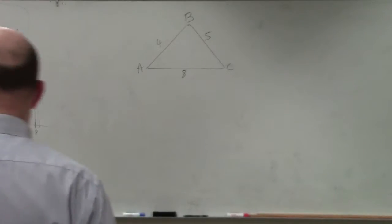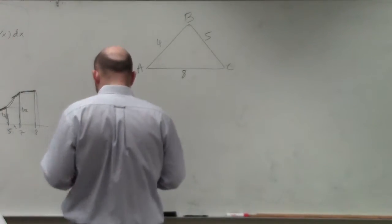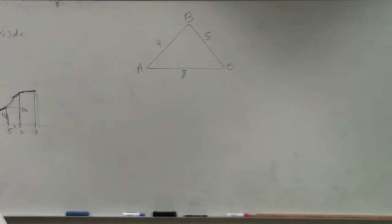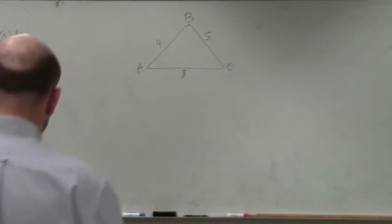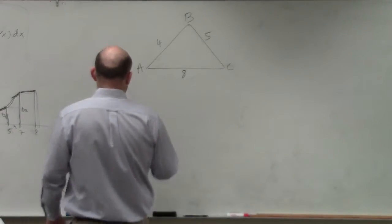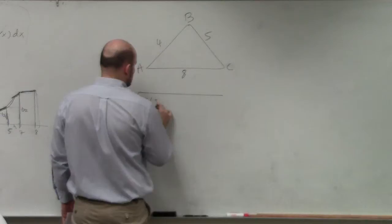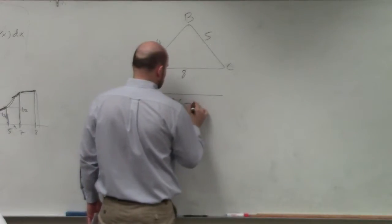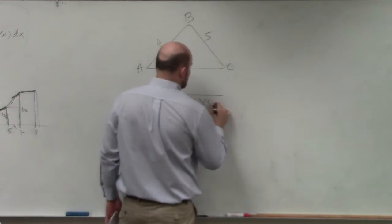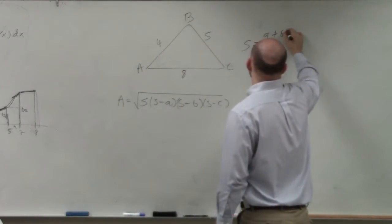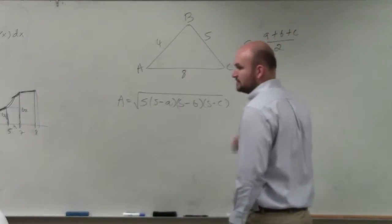So to do a problem like this, we need to use Heron's formula. What you're going to do in this case, Josh, is Heron's formula is going to tell you the area is equal to the square root of s times s minus a times s minus b times s minus c, where s is equal to a plus b plus c divided by 2.